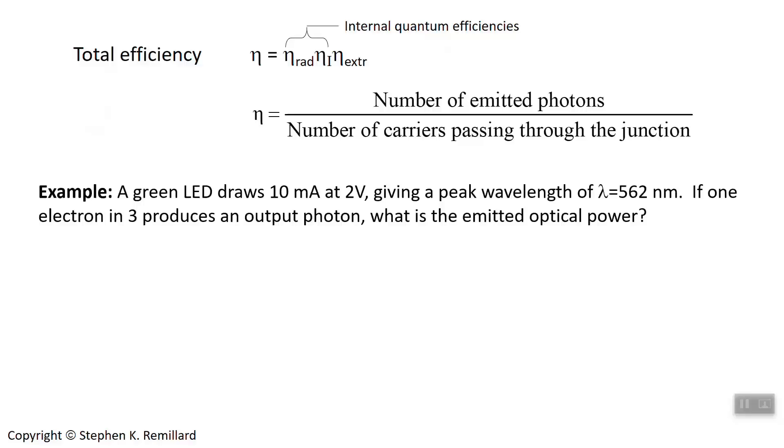So let's do a little problem here. I'll let you read it. So it's green. So we know its wavelength. We know that 10 milliamps is going in. That tells you how many electrons per second. That's how many carriers per second are entering the p-n junction.